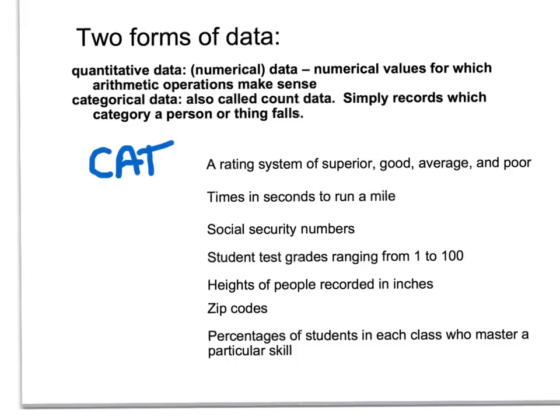Time in seconds to run a mile — it makes sense to have half a second. I can run the mile in four minutes and one and a half seconds. So finding an average or a mean makes sense. This would be quantitative.